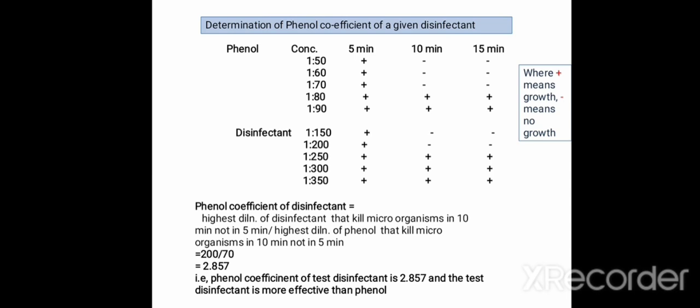Here, plus indicates growth and minus means no growth. In case of the disinfectant, at 1:150 and 1:200 dilutions, the disinfectant kills microorganisms in 10 minutes and 15 minutes but not in 5 minutes. Whereas at 1:250, 1:300, and 1:350 dilutions, the disinfectant does not kill microorganisms in 5 minutes or even in 10 minutes. The phenol coefficient is calculated as the highest dilution of disinfectant that kills microorganisms in 10 minutes but not in 5 minutes, divided by the highest dilution of phenol that kills microorganisms in 10 minutes but not in 5 minutes.